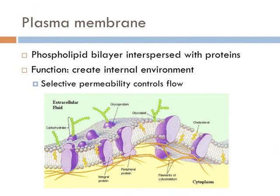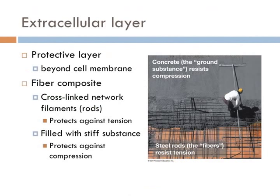Cellular interactions start at the cell membrane. Recall that the cell membrane is composed of a phospholipid bilayer interspersed with proteins. The primary function of the plasma membrane is to create an environment inside the cell that is different from the conditions outside. The selective permeability of the membrane controls the flow of materials into and out of the cell.